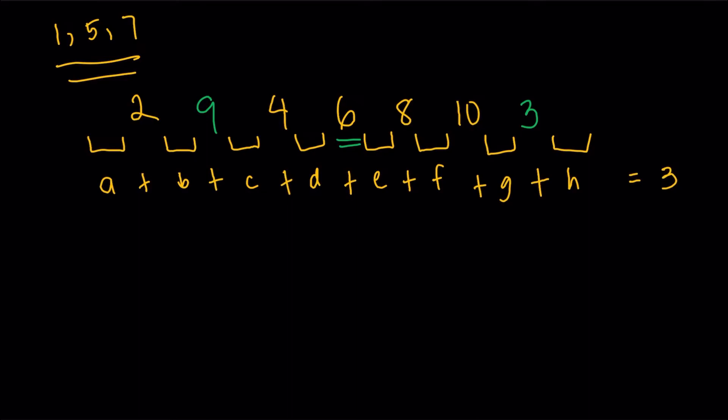Next, by stars and bars, the total number of ways to distribute 1, 5, and 7, again, not taking into consideration their arrangement yet, the number of ways to distribute would be three plus, well, there are eight variables here. So eight, then minus one, choose eight minus one. This would be equal to 10 choose 7 over here, or just 10 choose 3. Well, they're just pretty much the same thing.